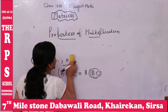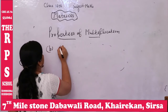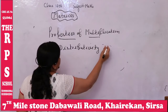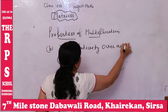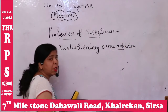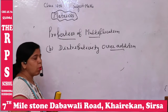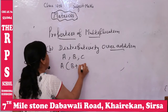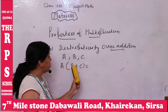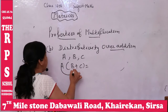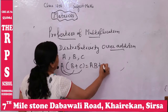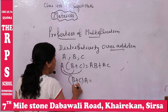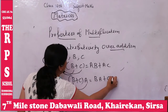Next is distributivity over addition. If A, B, and C are matrices, then A(B + C) = AB + AC — A first multiplies B, then C. Similarly, (B + C)A = BA + CA. This is the distributivity property of matrix multiplication over addition.